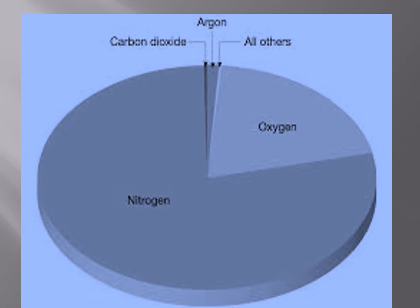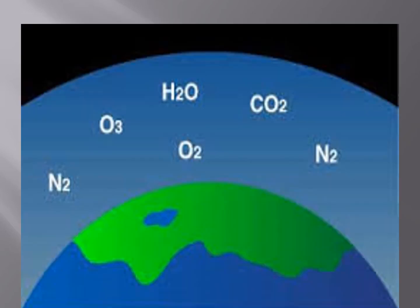This pie chart shows the percentage of nitrogen, oxygen, carbon dioxide, argon, and other contributors of the earth's atmosphere. Another slide gives a diagrammatic explanation of the components of the earth's atmosphere.